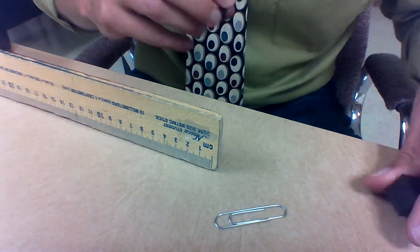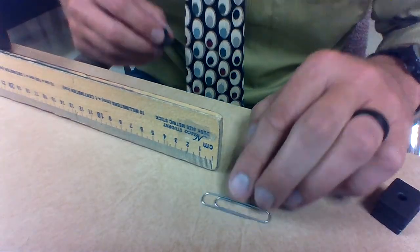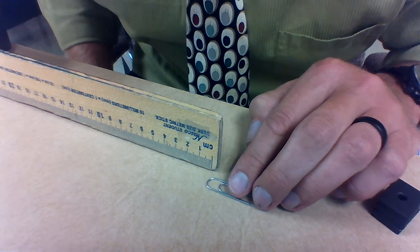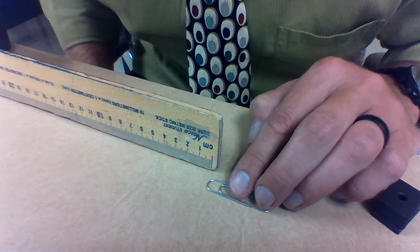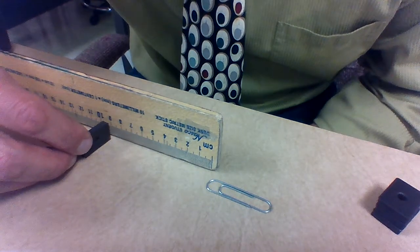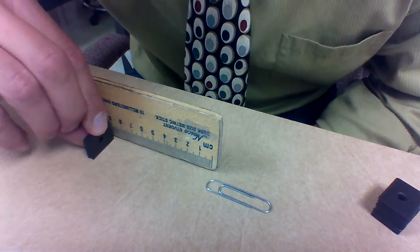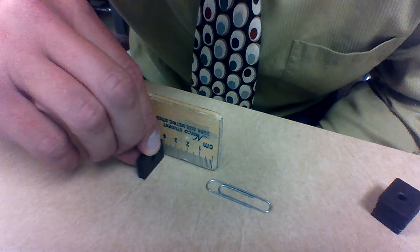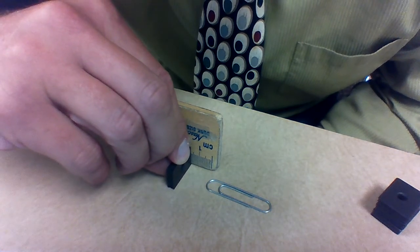What you're going to do is start with one paper clip at zero centimeters, and you're going to slide your magnet until the paper clip jumps to it.